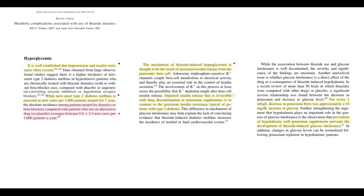We have to know that diuretics cause reversible hyperglycemia, simply because in this case hyperglycemia is caused by hypokalemia. So once we restore potassium level, glucose level will also normalize. Interestingly, a 1 mEq decrease in potassium level corresponds to a 10 mg/dL increase in blood glucose level. So if we give a patient diuretics and do not want to cause a hyperglycemic state, it will be wise to also give potassium supplements.